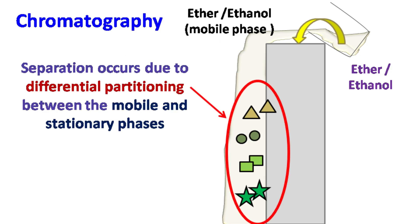Hence, separation occurs due to the differential partitioning of the sample between the mobile phase and the stationary phase.